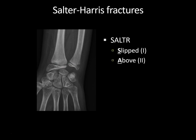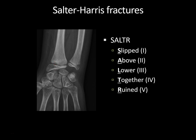Type 2 is Above — when you have just the metaphysis involved extending into the growth plate. L is Lower, involving the epiphysis and growth plate — that's type 3. Type 4 is Together, when both the metaphysis and epiphysis are involved across the growth plate. Type 5 is a compression or crush fracture across the growth plate — the growth plate is ruined. So S-A-L-T-R. For lower Salter categories, if uncomplicated, they may do well with just casting, while internal fixation is required for higher categories.